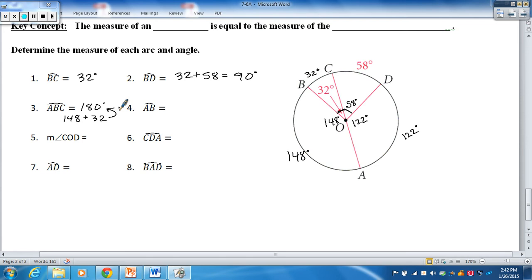AB is a minor arc. And we've already found that one to be 148 degrees. And if you want to make a little note to yourself to show some work, that's what we did to get that. COD. Well, we know that these are equal to each other. So we can say 58 degrees. CDA. Well, again, major arc or semicircle. That's a semicircle. So 180 degrees.